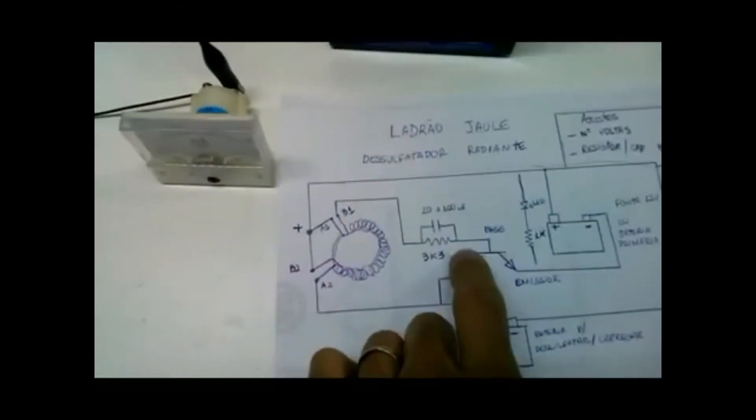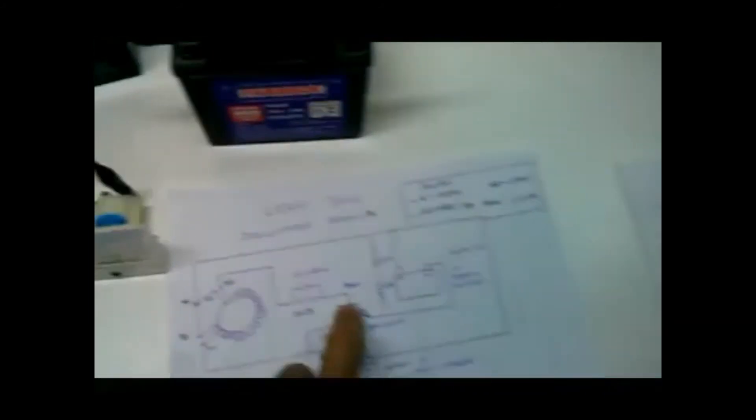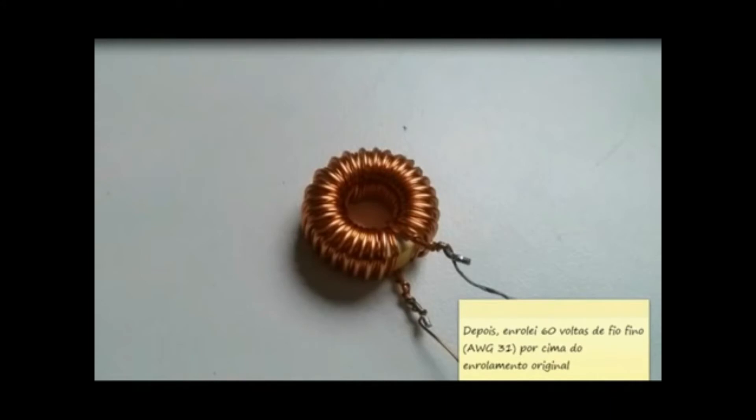The large wire fits the base of the transistor. The original winding was 30 turns. Then I wound up 60 more turns of thin wire.